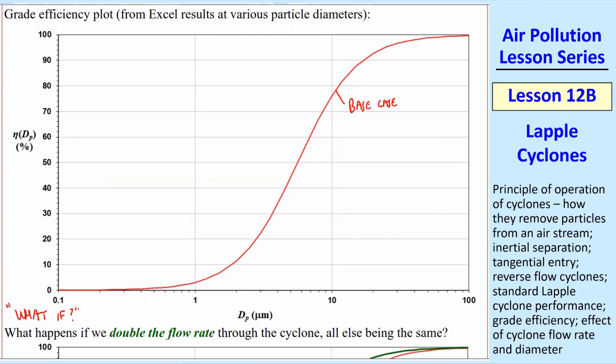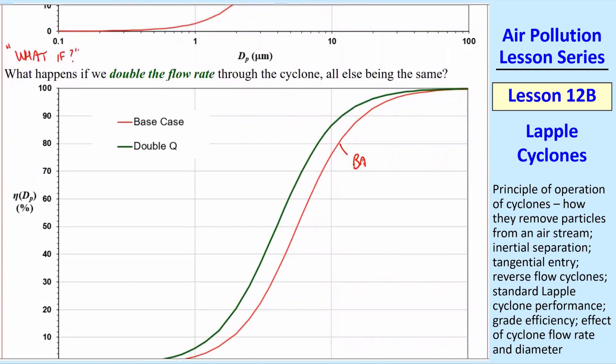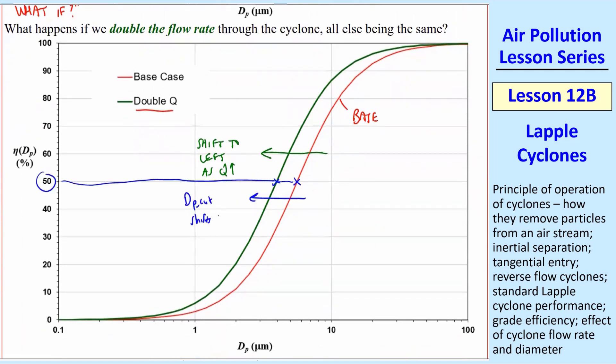And now let's do some what-if analysis here. For example, here I doubled the flow rate, kept everything else the same. It's the same cyclone, same dimensions, same particles, everything is the same, except I just changed that one cell and doubled it. This is the base, and this is with the double Q, the green one. So what happens is as you increase your flow rate, the curve shifts to the left as Q goes up. And the cut diameter also shifts to the left. Now, is that better or worse? Well, it turns out that left is better, and that is not intended to be a political statement.